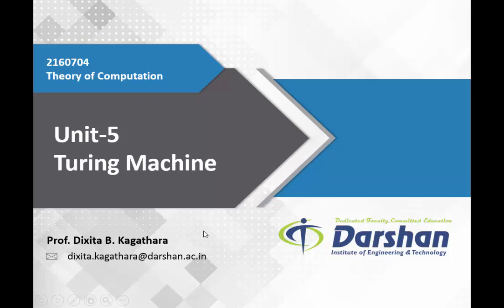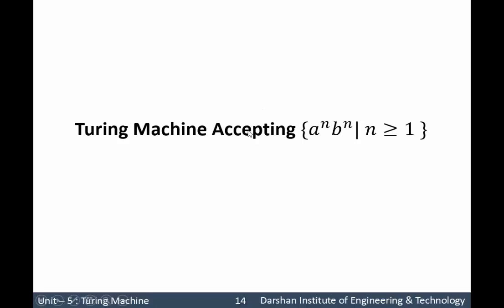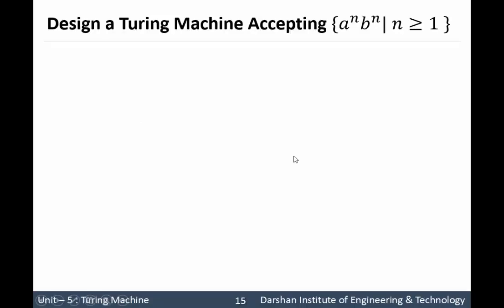Hello everyone. In this video lecture we are going to discuss another example of a Turing machine, where we will see how to design a Turing machine for a given language. Our task is to design a Turing machine which recognizes the language a^n b^n where n is greater than or equal to 1. The meaning is simple: the number of a's should be exactly the same as the number of b's, and a's should be followed by b's.